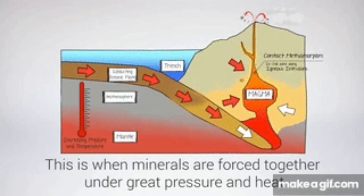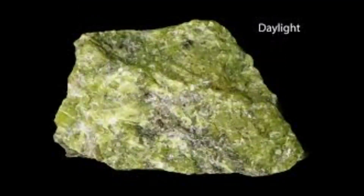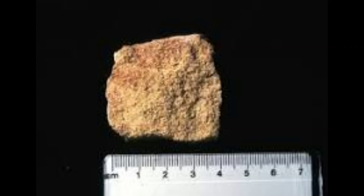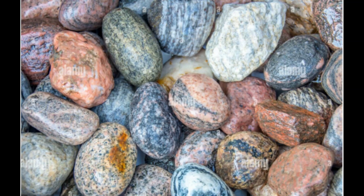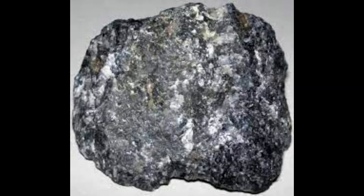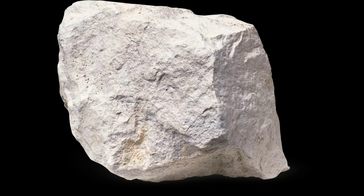Minerals are chemical substances of which rocks are made. The major rock-forming minerals are quartz, feldspar, and mica. Rocks differ in the method of their formation, their thickness, and their shapes. They are divided into three types: sedimentary, igneous, and metamorphic rocks.